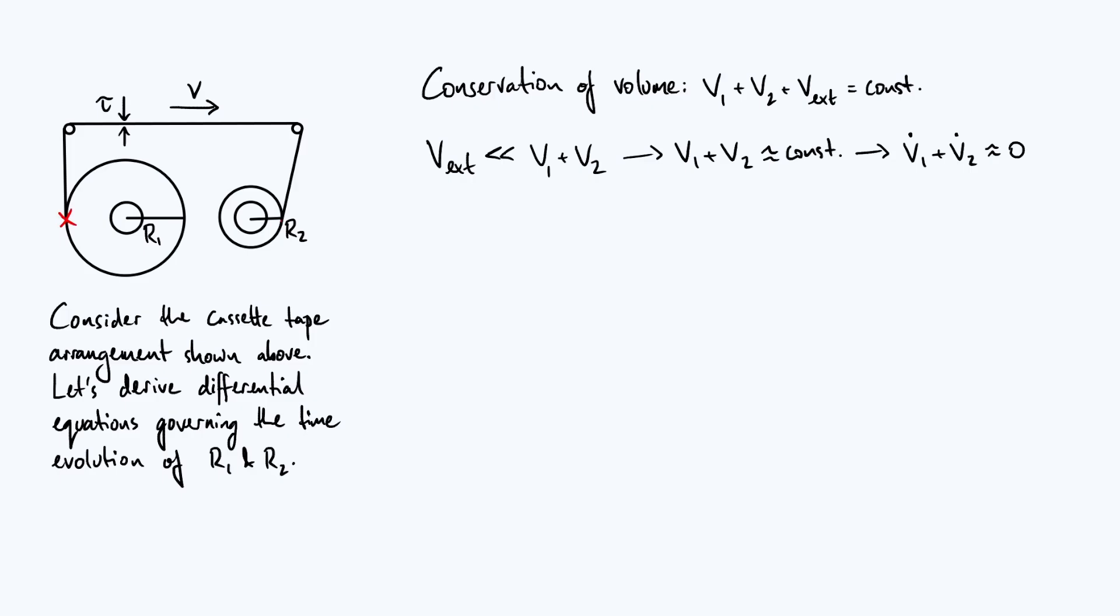this point here and this point here, in other words, the point of tangency of the tape onto each of the spools, those two points are going to move around as the two radii change.